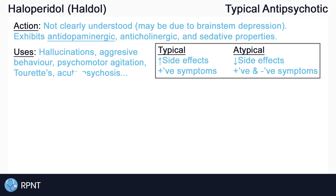Because haloperidol is a typical antipsychotic, it is used for the treatment of positive symptoms in schizophrenia, such as hallucinations, aggressive behaviors, and psychomotor agitation. Haloperidol is also used for the treatment of Tourette syndrome, acute psychosis, and other behavioral problems.